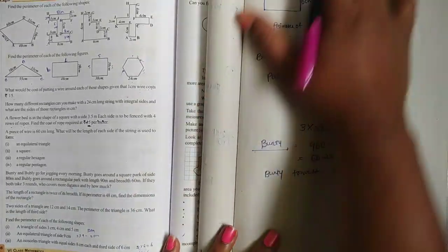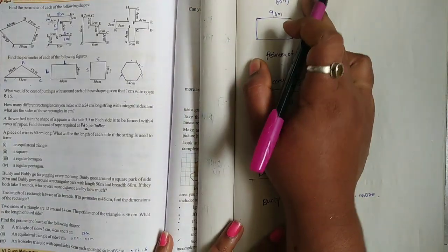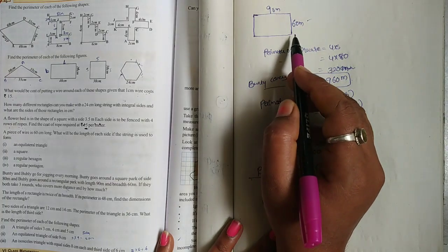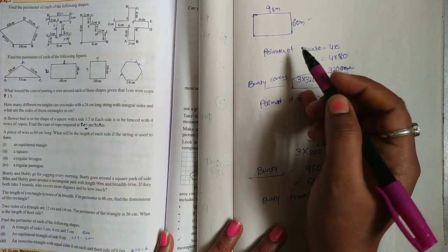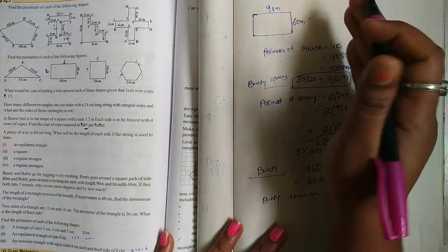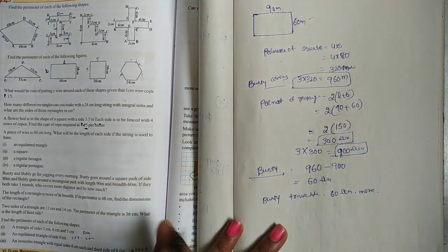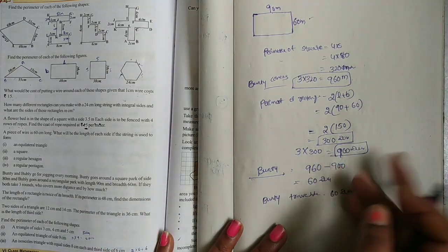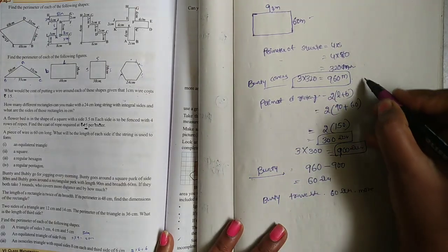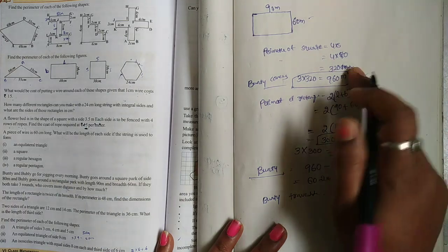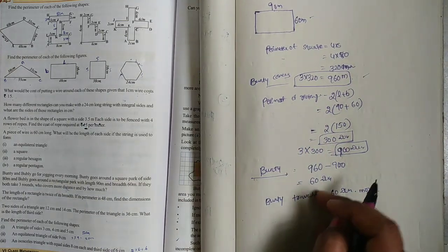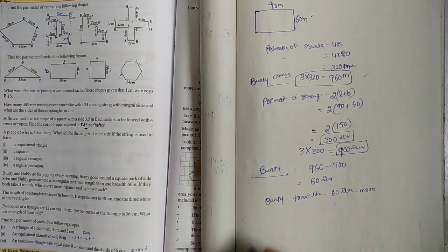Banti runs a square-shaped ground for 3 rounds with one side 80 meters. Bubli runs a rectangular-shaped ground. We find out the perimeters and multiply 3 times to get the total distance each travels, then minus the distances to find the difference.